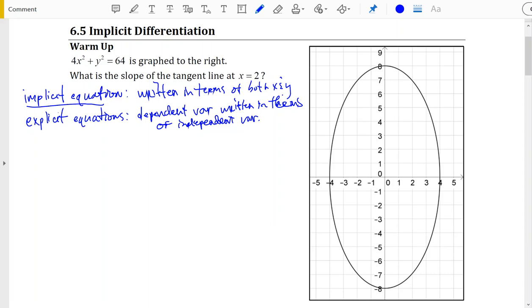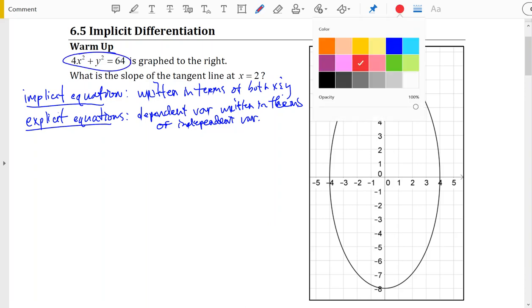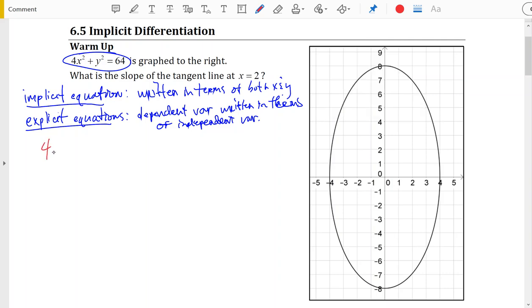That's what we're used to. So the way most people approach this derivative problem is they take our implicit equation and turn it into an explicit equation so that we can take its derivative. So that means taking 4x squared plus y squared equals 64 and isolating y so that y is written in terms of x.